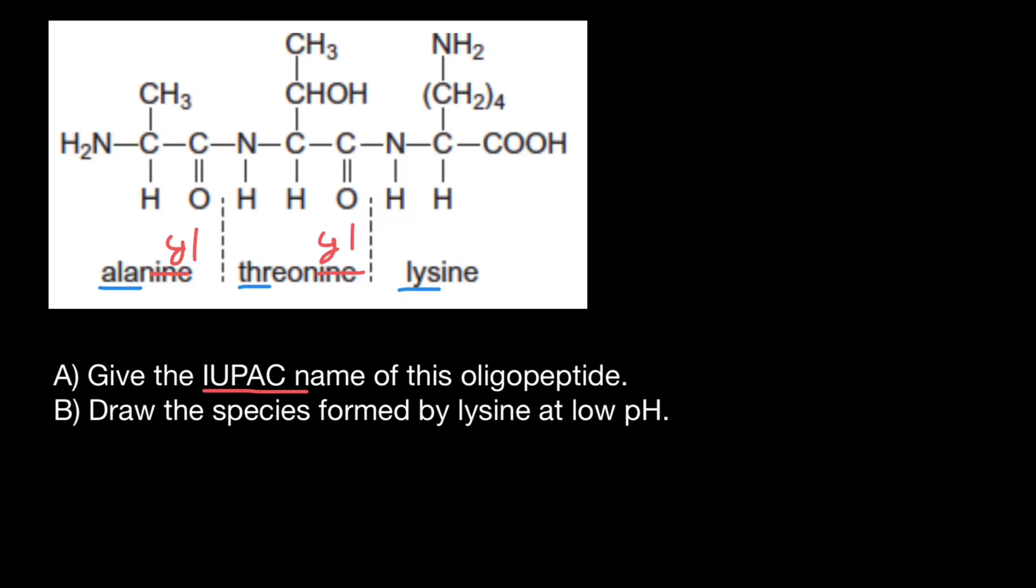And one letter abbreviation would be a little bit more complicated. For alanine, we have a number of amino acids that start with A. So not all of them, of course, would have one letter abbreviation as A. But alanine, this is a mnemonic technique because it has two A's in the three letter abbreviation. One letter abbreviation would be A. And as for the threonil, one letter abbreviation would be T. But for lysine, we have two amino acids which start with L. It's going to be K. So one of the amino acids that start with L, of course, would have one letter abbreviation L. But lysine would have one letter abbreviation is K.